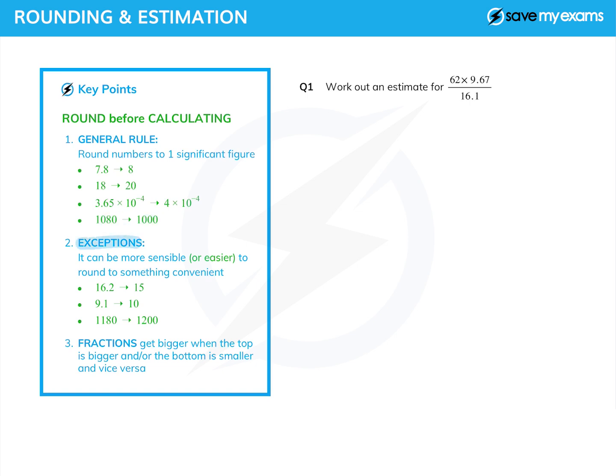Now that is a general rule, but often we will apply exceptions to that rule. Sometimes we have to decide whether it's more sensible or easier to round something more convenient. So 16.2 might be 20 to one significant figure, but actually 15 is usually just an easier number to work with and it's a lot closer. Again, 9.1 could round to 9, but actually it might be easier to work with 10. And 1180 could round to a thousand strictly to one significant figure, but actually 1200 might be better. I know that's two significant figures, but it's quite easy to work with.